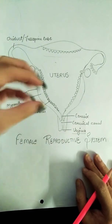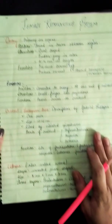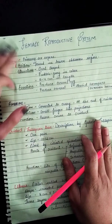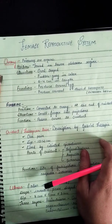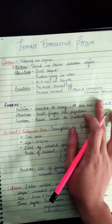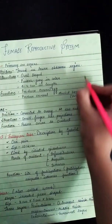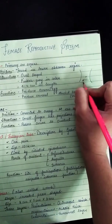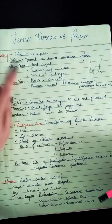First we will start with the ovary, because this is the primary and very important sex organ. Ovary — I have to write its function, position, and structure. First of all, the ovary is the primary sex organ. Its position: found in the lower abdomen region. This is the abdomen, and the ovary is located in the lower part.